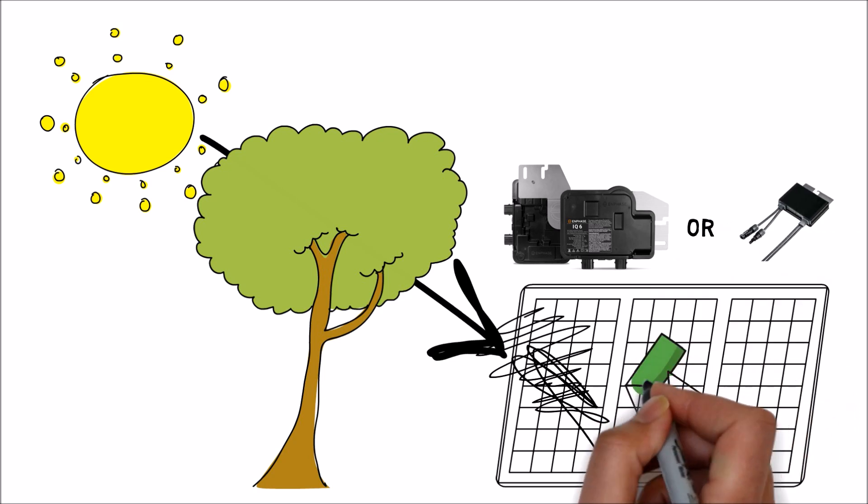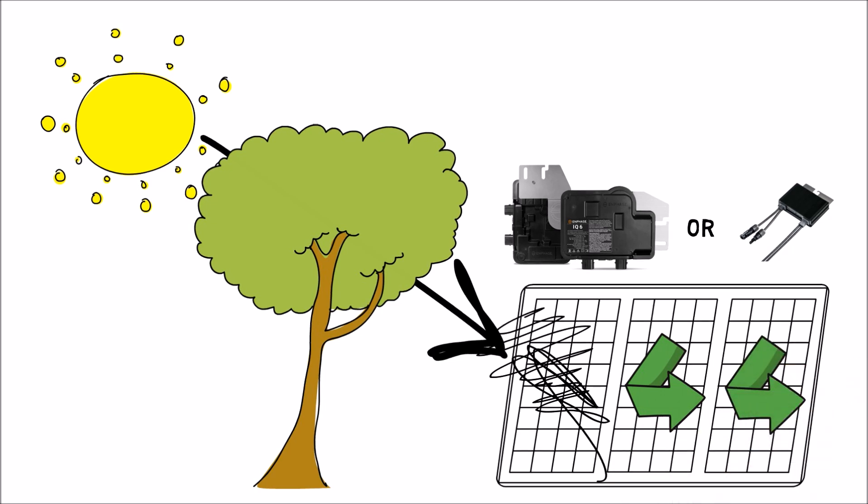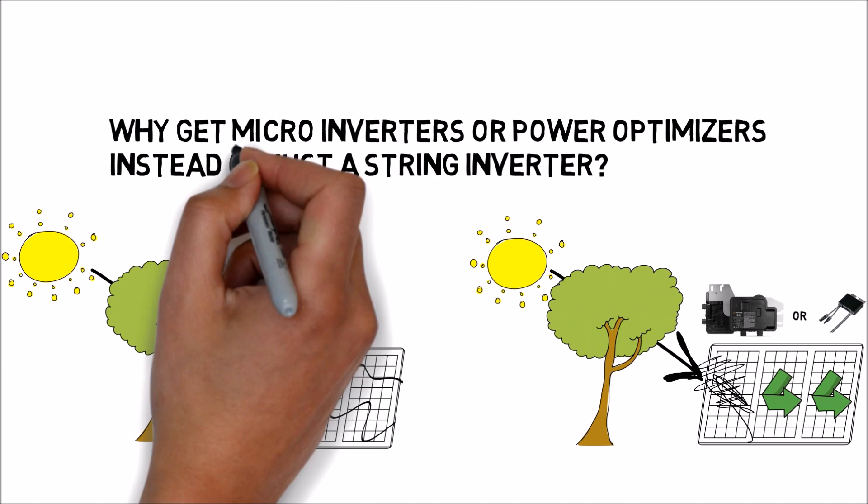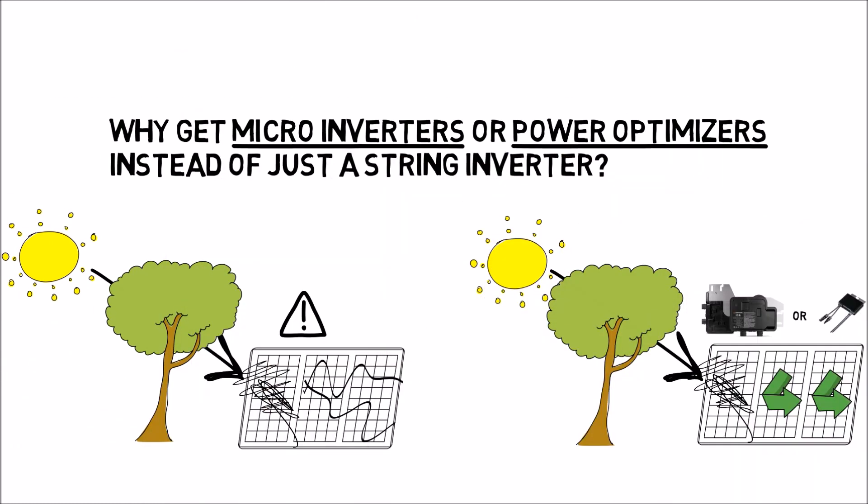In this case, each of the solar panels is producing energy independent of one another, unaffected by the solar panel that has shade on it. This is why you might consider doing a microinverter or power optimizer instead of a string inverter.